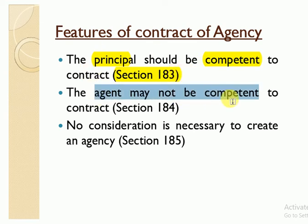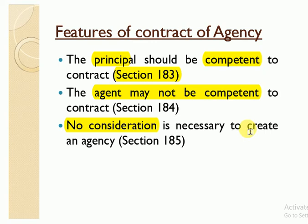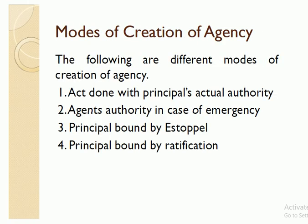An agent may not be a competent person — meaning a minor can also act as agent. But as I mentioned in the previous video, if the principal appoints a minor, the minor cannot be made responsible to the principal. Also, there is no consideration required to create an agency. These are the features of agency — actually a summation of the previous video. Now let's move on to modes of creation of agency.